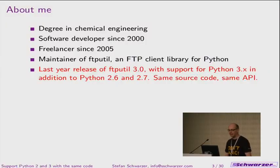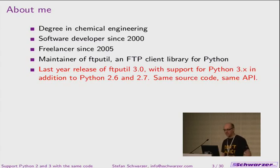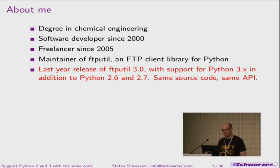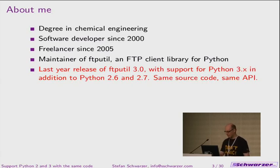I want to give this talk about supporting Python 2 and 3 with the same code. I have a degree in chemical engineering, but in 2000 I switched sides — I've been programming since I was 15. In 2000 I became a full-time software developer, and since 2005 I am self-employed. I maintain the FTPutil client library. The starting point for this talk was myself in the situation when users asked for Python 3 support in FTPutil. There was one ticket, then a question on the mailing list. Last year I had the FTPutil 3.0 release with Python 3 support in addition to 2.6 and 2.7.